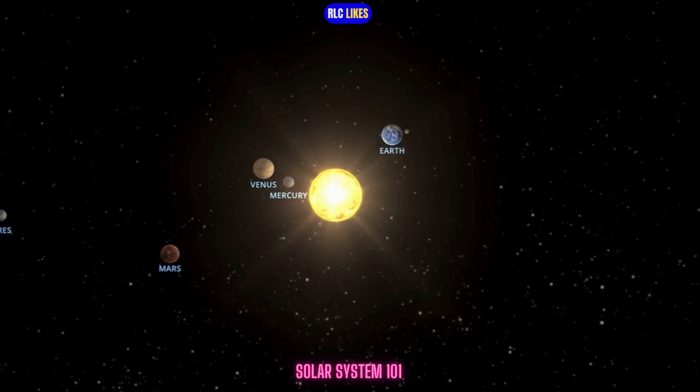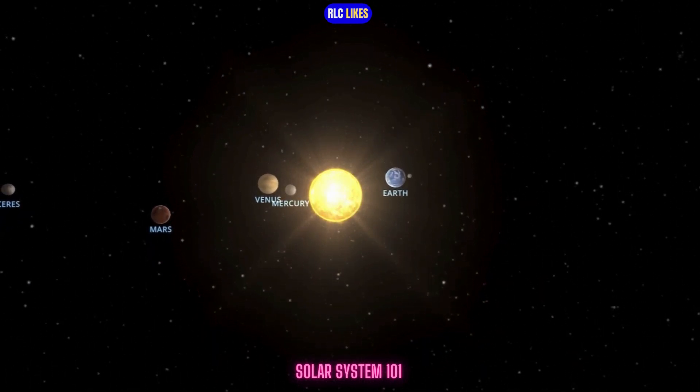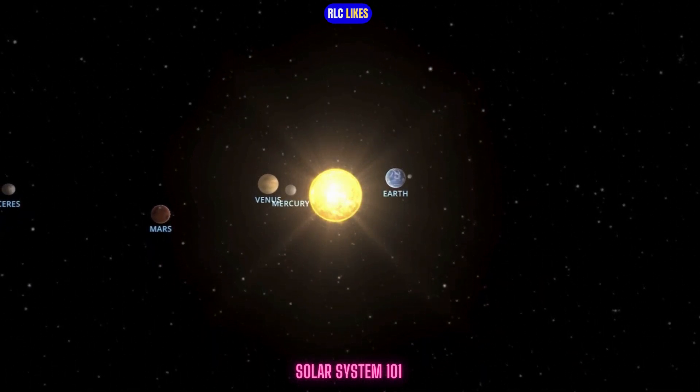We call it the solar system because it is made up of our star, the Sun, and everything bound to it by gravity.